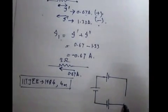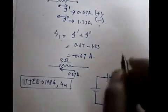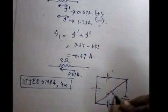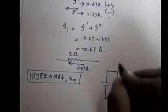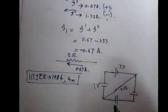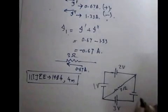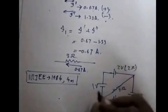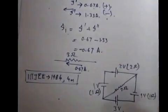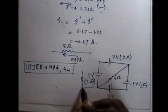Here is the IIT JEE 1984 practice problem: there is a 2Ω resistor, with EMF sources E = 2V, F = 1V, G = 3V, and 1V. Their internal resistances are 2Ω, 1Ω, 3Ω, and 1Ω respectively. Try to solve this using the superposition principle — replace each internal resistance with its equivalent resistor when removing the other voltage sources. I'll post the answer in the comment section. Thank you for watching, don't forget to subscribe, and take care!